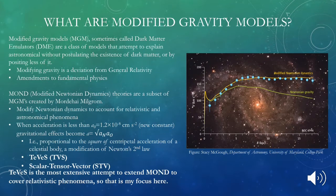Modified gravity is a deviation from general relativity, and it involves making amendments to our fundamental physical theories. In particular, there's a paradigm called the MOND paradigm — modified Newtonian dynamics — a set of theories that try to modify Newtonian dynamics to account for relativistic effects in astronomical phenomena.